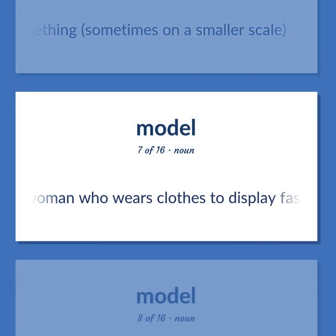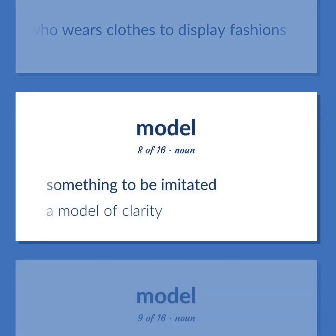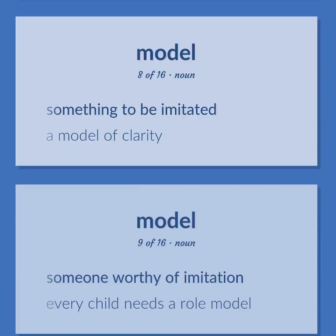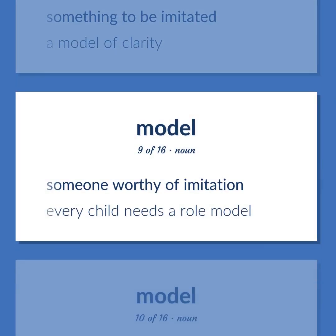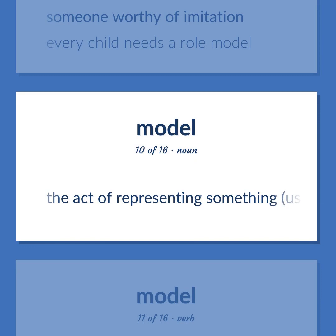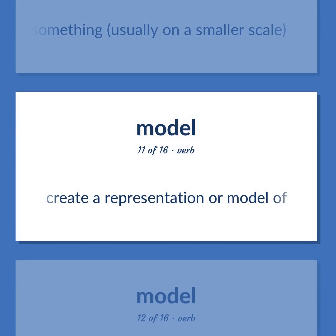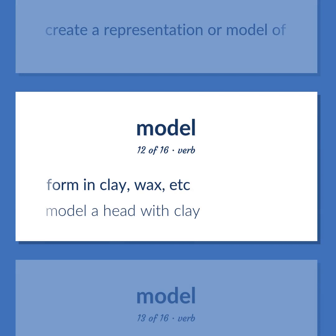Worthy of imitation — model citizens. Representation of something, sometimes on a smaller scale. A woman who wears clothes to display fashions. Something to be imitated — a model of clarity. Someone worthy of imitation — every child needs a role model. The act of representing something, usually on a smaller scale. Create a representation or model of — form in clay, wax, etc. Model a head with clay.